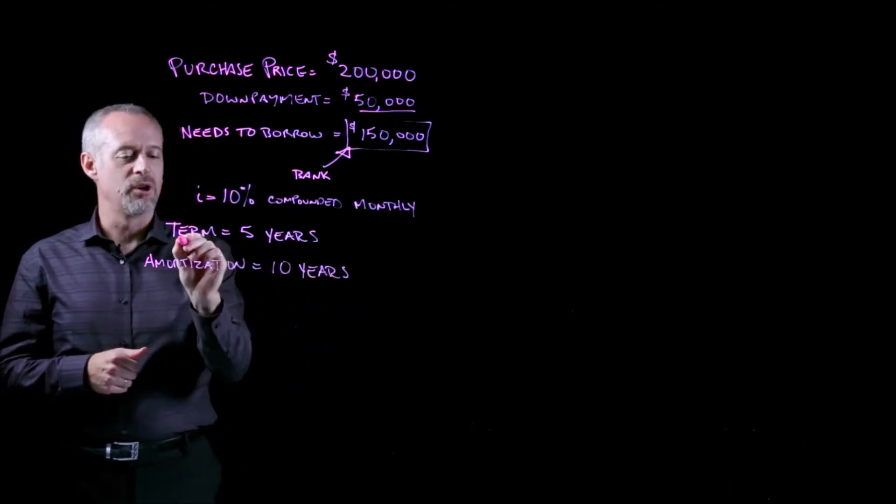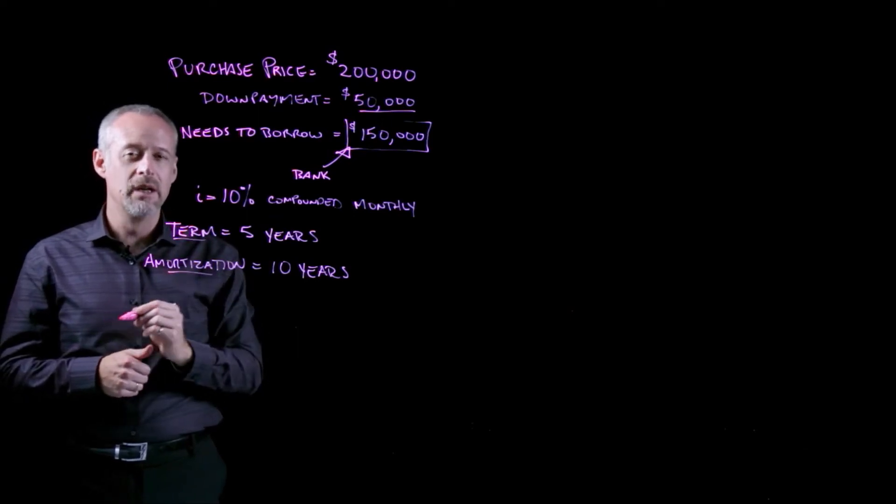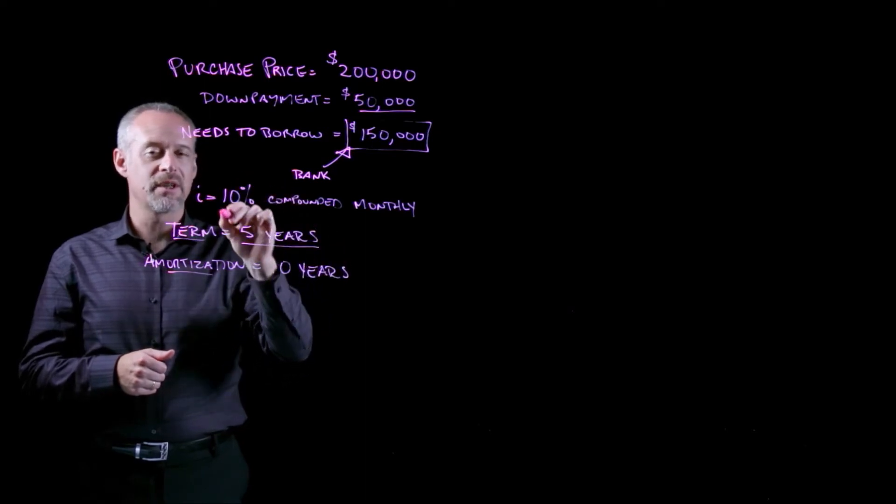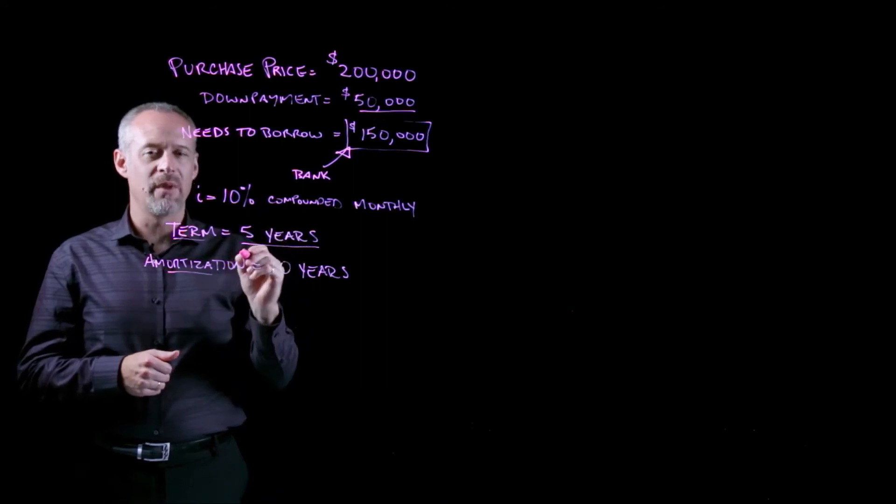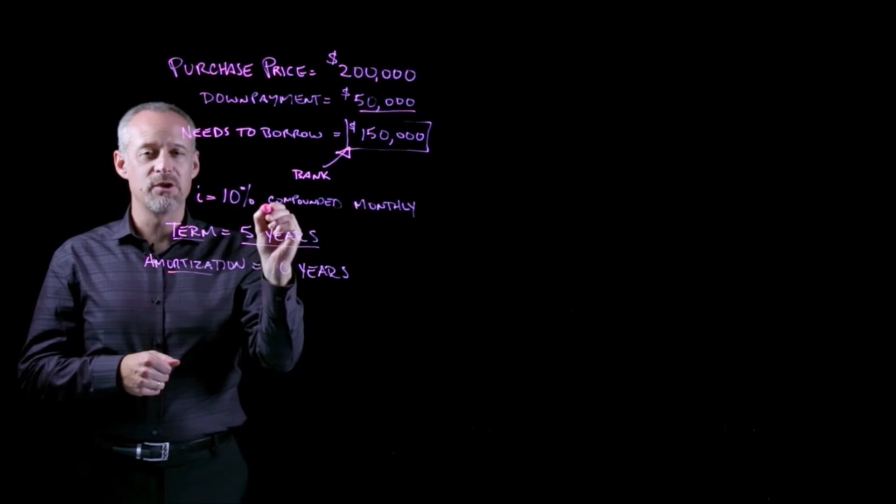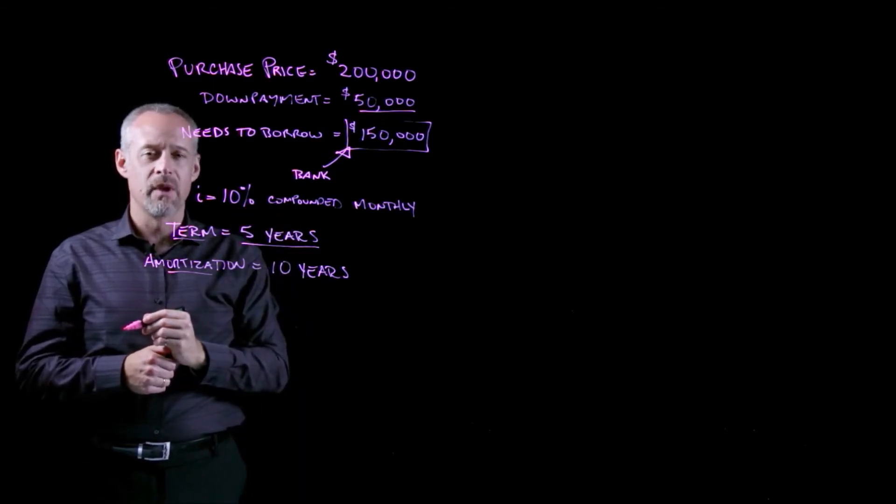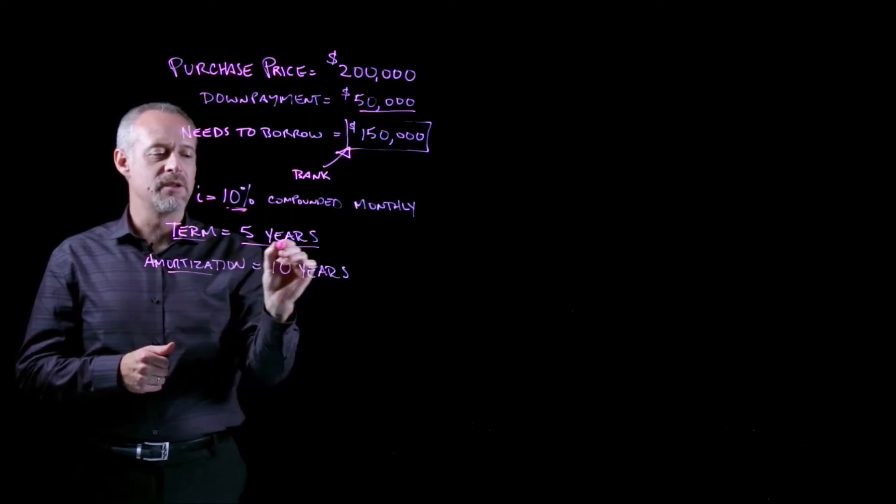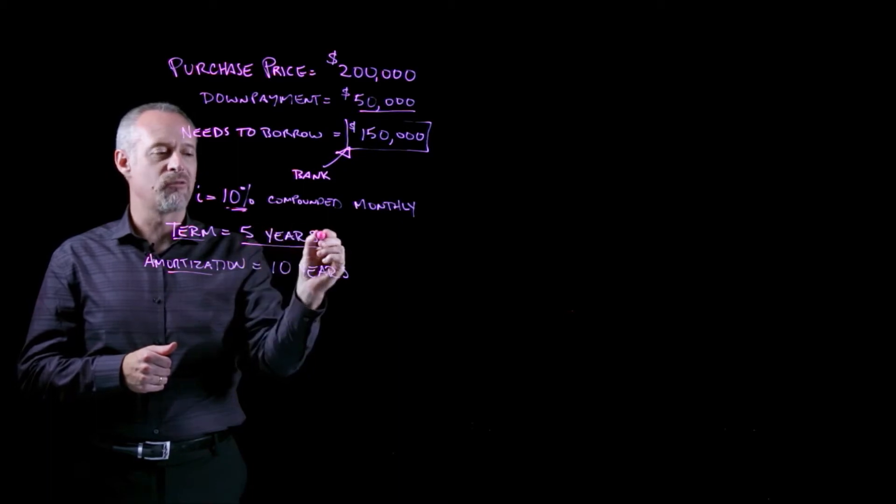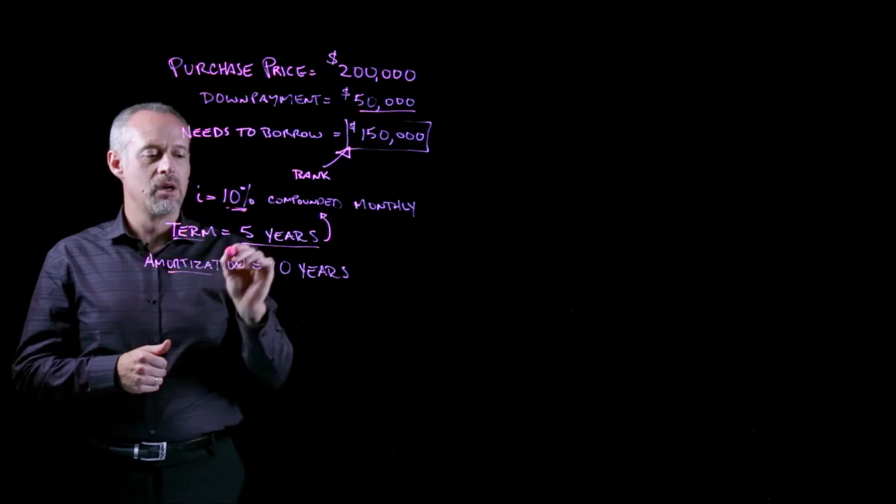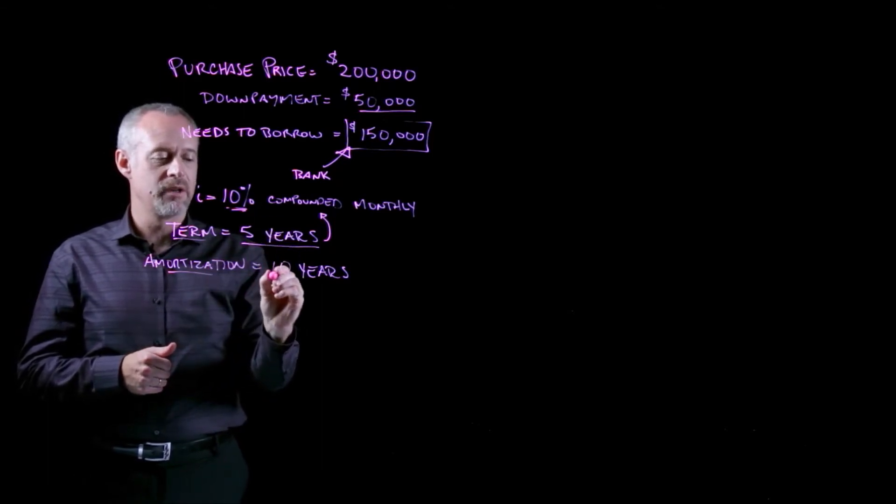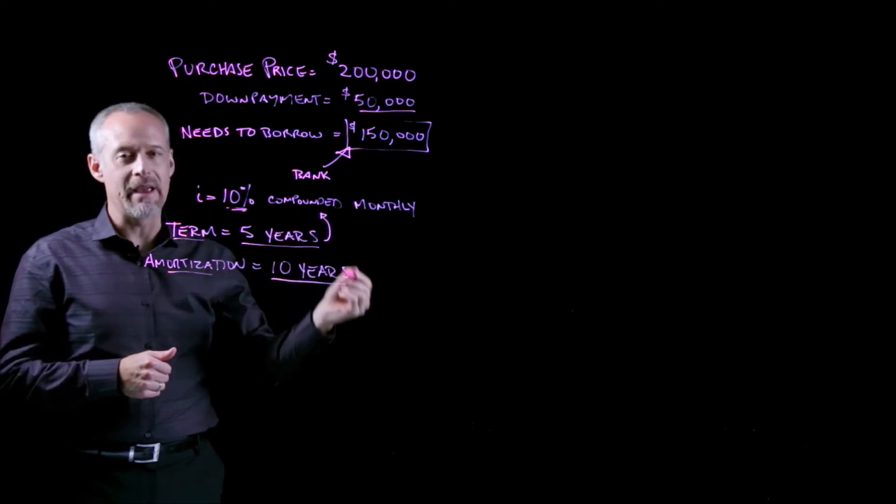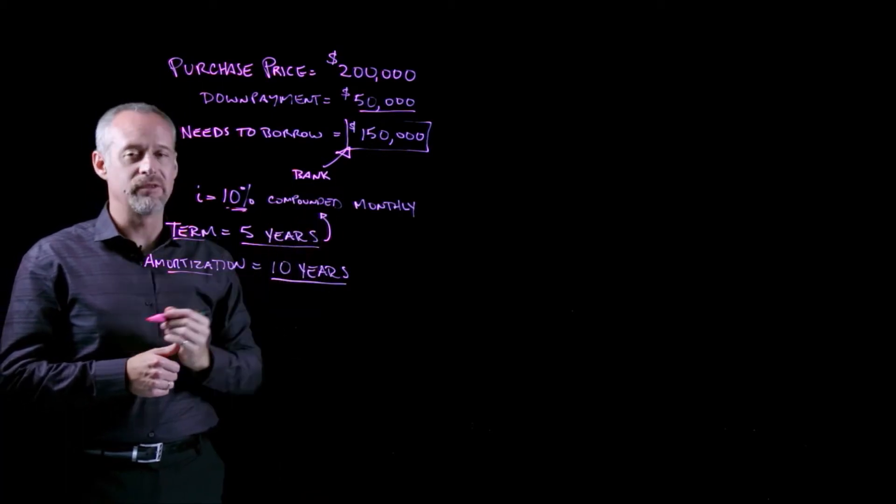Now, these two terms, the term term and the term amortization, means something very specific when it comes to mortgages. The term refers to the time period over which the particular interest rate is valid. So you could think of the term as sort of, this is the deal for now. But as you may know, interest rates change over time. And most of the time, neither lenders nor borrowers want to lock into something for too long because this interest rate might change. So the term is the agreement that the borrower makes with the bank for the amount of time that this interest rate will hold.